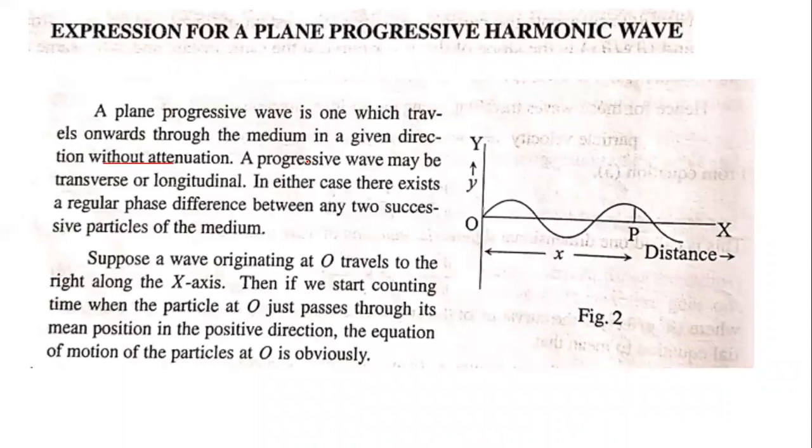A progressive wave may be transverse or longitudinal. In transverse waves, the propagation of the wave is perpendicular to the direction of the vibration. In longitudinal waves, the propagation of the wave is parallel to the direction of the vibration.